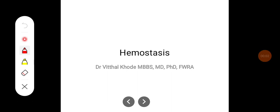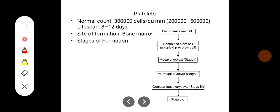In this class we'll try to learn about hemostasis, that is the arrest of bleeding. Before that, we'll learn about platelets. The normal platelet count is around 3 lakh cells per cubic millimeter of blood, and it can range from 2 to 5 lakhs. The lifespan of a platelet is around 8 to 12 days.